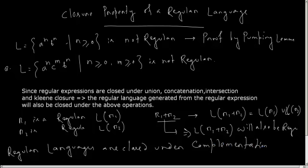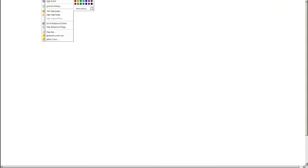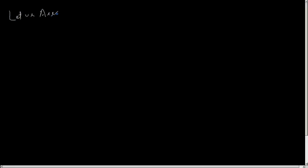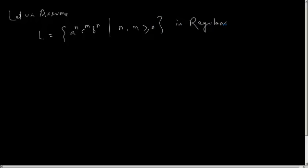Let us try to solve this problem. Let us assume that the language L equal to a to the power n, c to the power m, b to the power n, where n and m are both greater than or equal to 0, is regular. Then suppose I take the intersection: L intersection A-star B-star. Those words which do not contain any C — only A's and B's — will be part of this language.